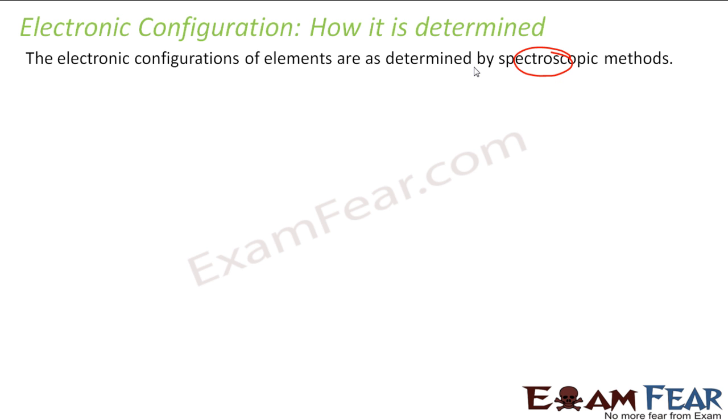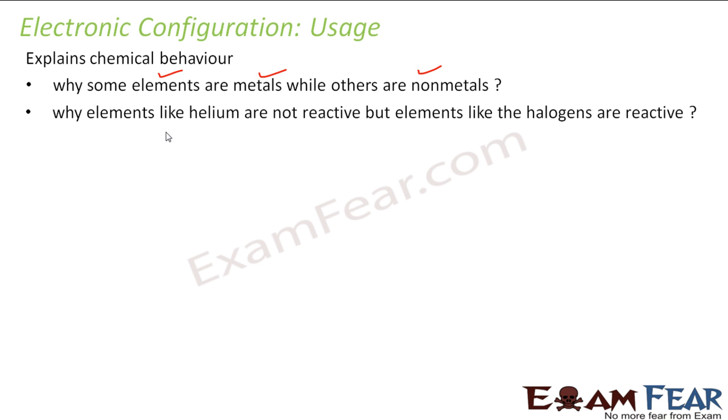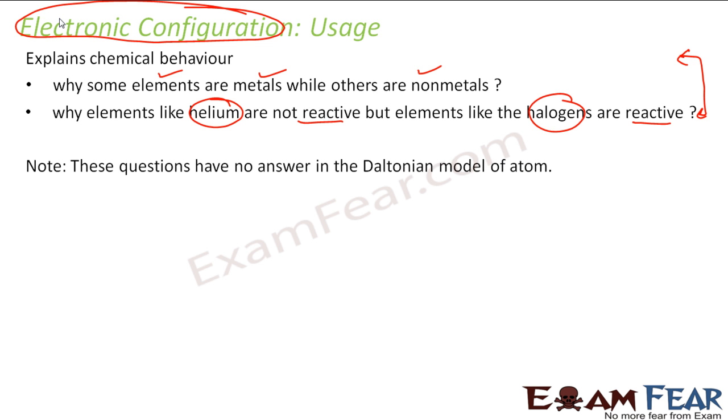Now we have learned electronic configuration. The question can be, what is the use of electronic configuration? The usage is to understand the chemical behavior of an element. It tells why some elements are metal, why others are non-metal. It also explains why some elements like helium are not reactive, but halogens like chlorine are reactive. The behavior is dependent on electronic configuration.